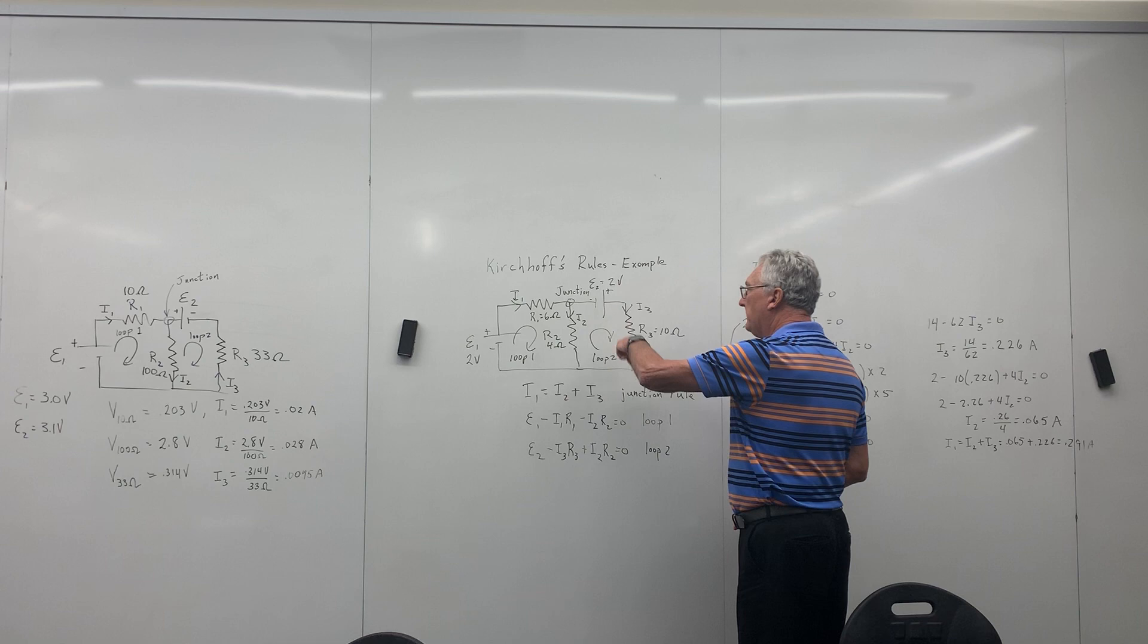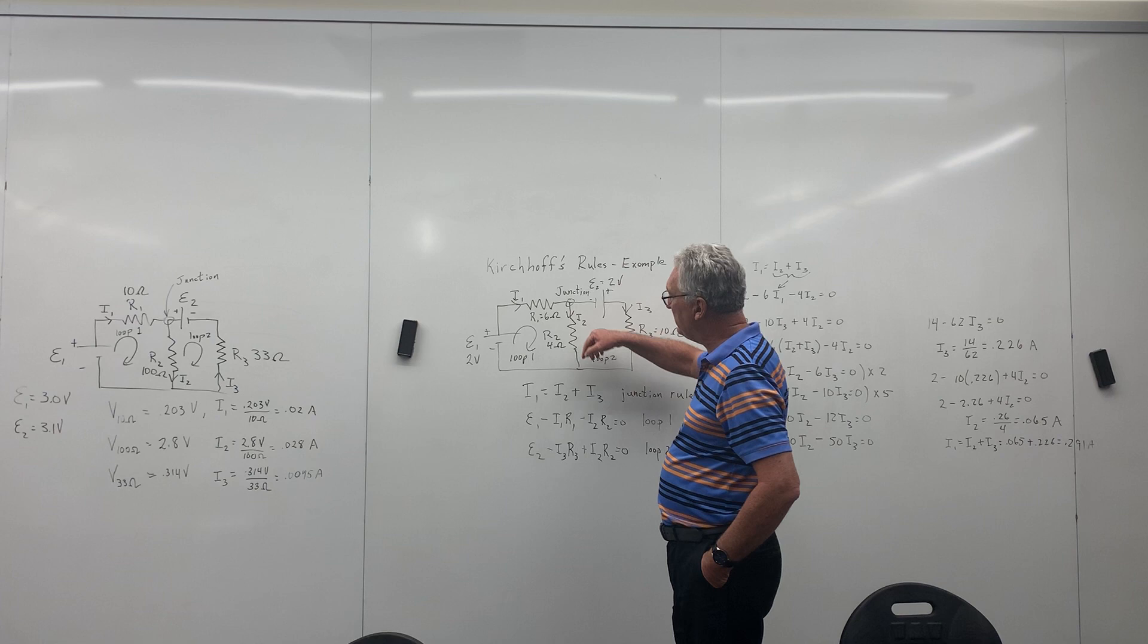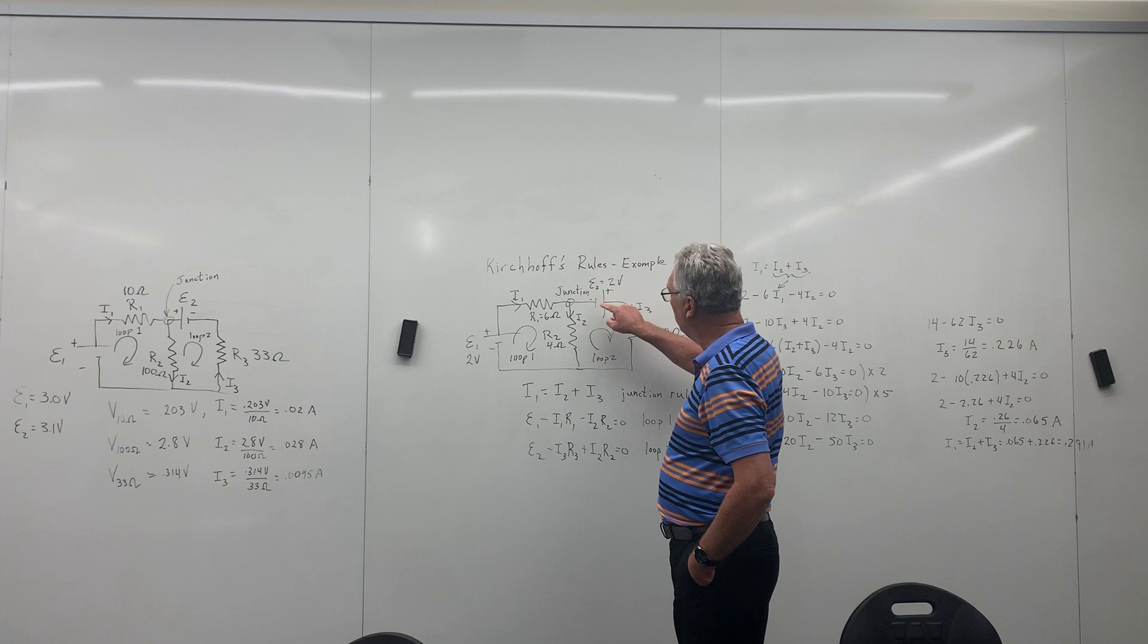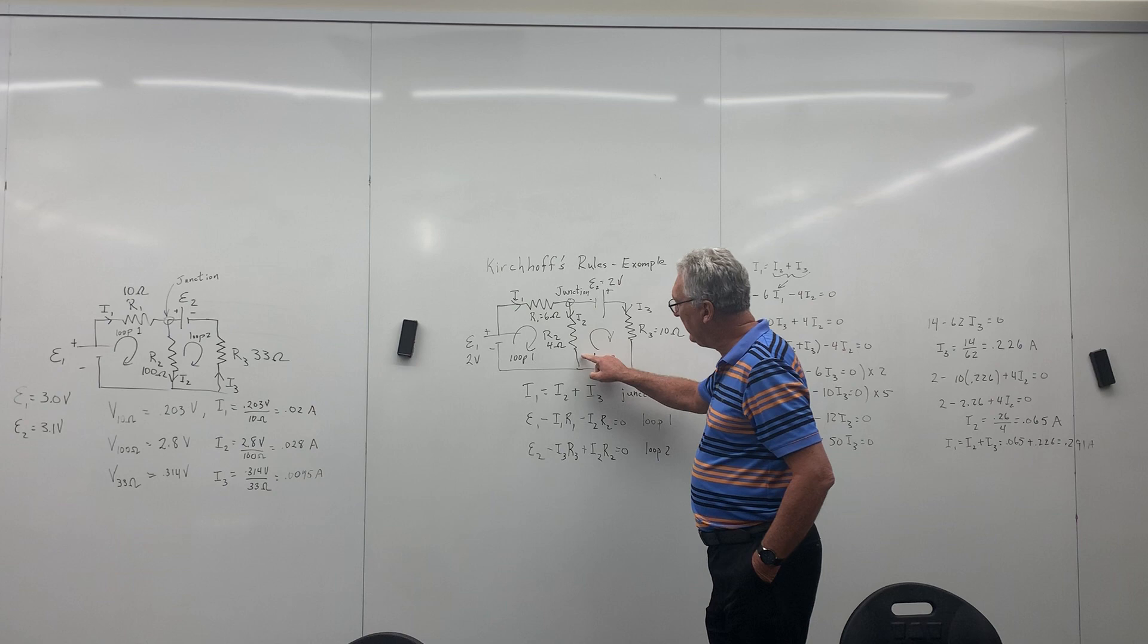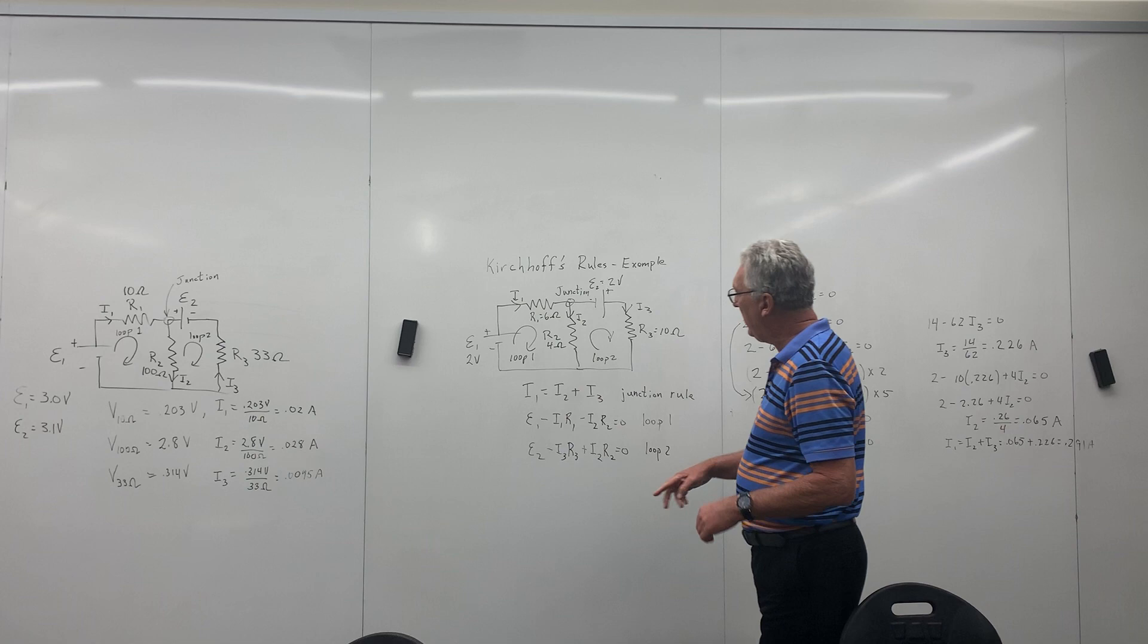In this loop, I'm going to do the same thing start here. Plus two minus I3R3. But then notice what happens here. The direction of I2 that I've chosen is in this direction. So this is actually at a higher potential than this is here. So I'm going plus two minus this voltage drop. But then this is going to be plus because this is at a higher potential than that. So this is going to be two minus I3R3 plus I2R2. And that's this equation here.